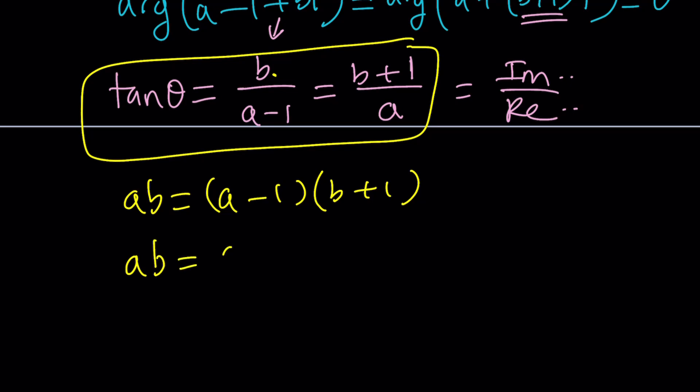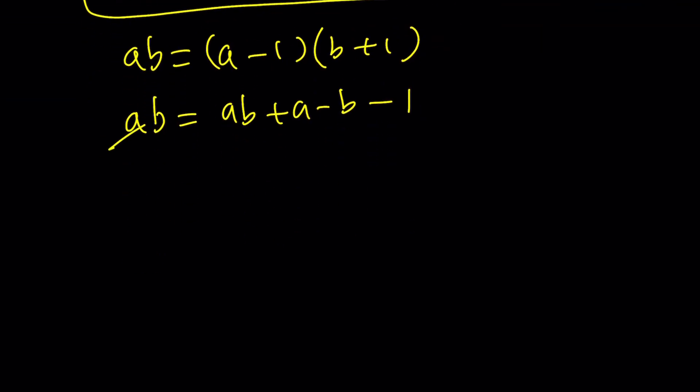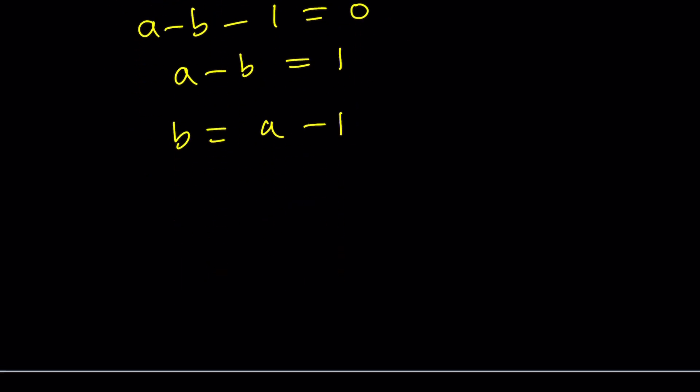Distribute. You get AB plus A minus B minus one. AB cancels out, leaving us with something like A minus B minus one is equal to zero. You can write this in so many different ways: A minus B equals one, B minus A equals negative one, B equals A minus one. So on and so forth. So there are so many forms and let's just write it as B equals A minus one. What does this represent? This represents complex numbers whose imaginary parts are one less than their real parts. Make sense?